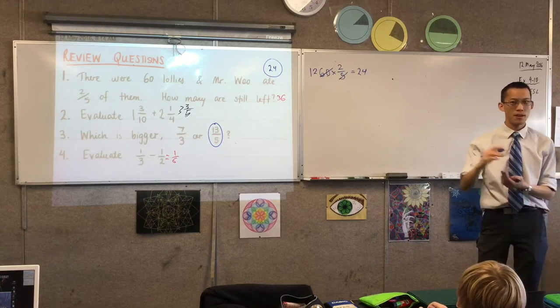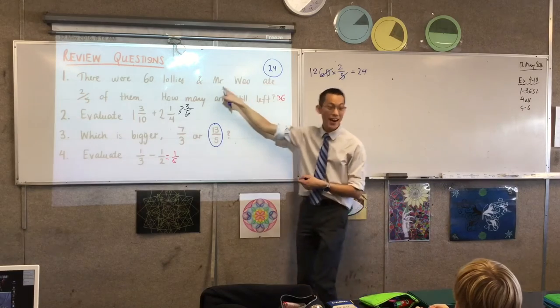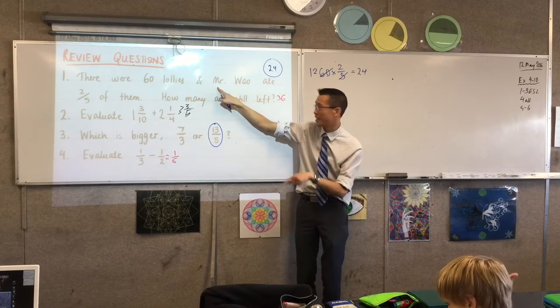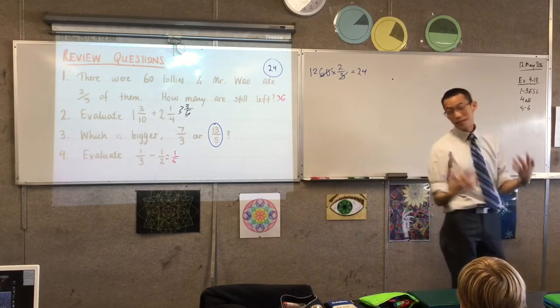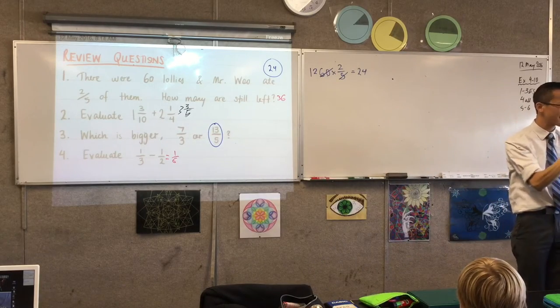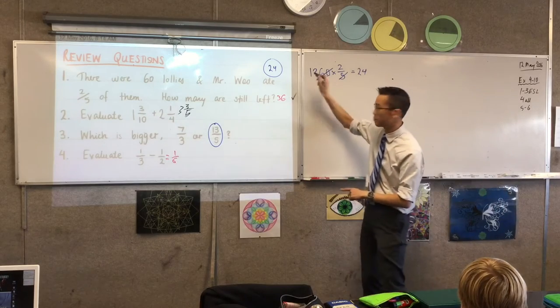The 24 is an important number. It's the number of lollies that I ate, but the question is asking something else, isn't it? It's asking how many are still left. So this shows the importance of reading the question. What's it really asking you? And 36 is perfect.